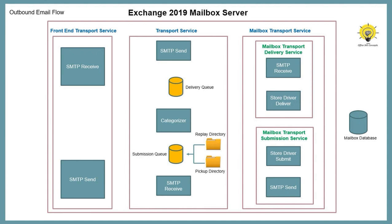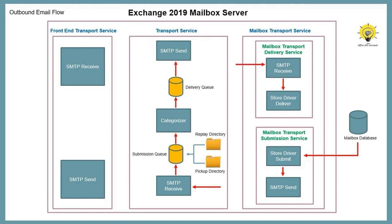If a user sends an email from the Exchange organization, the Store Driver Submission Service picks that email from the user's outbox and submits it to the submission queue. The Categorizer picks that email from the submission queue and performs routing resolution, recipient resolution, bifurcation, and if the email is sent to a distribution list, it expands the DL to check all members. After these checks, the Categorizer forwards the email to the delivery queue. If the recipient is external, the email is routed to the internet through a send connector; if internal, it is handed over to the Store Driver Delivery Service, which delivers the email to the mailbox database.